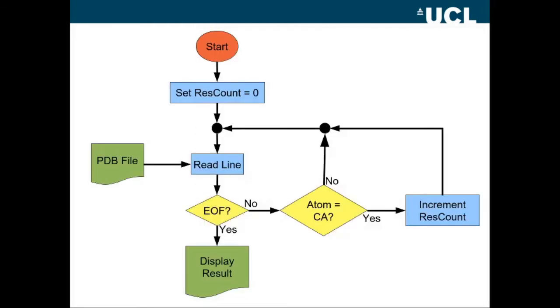Here, then, is a flow chart that would do what we need. We start at the top and we set ResCount, some variable in which we're going to store the number of residues to zero. We read a line from the PDB file and we test whether we've got to the end of the file. We haven't, we're at the start of the file.